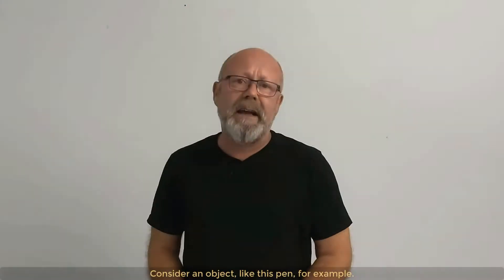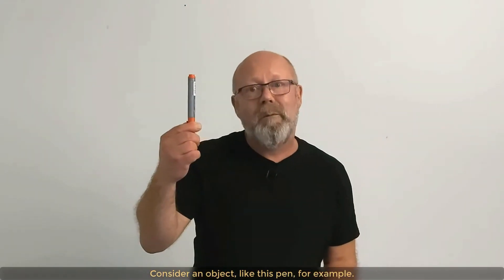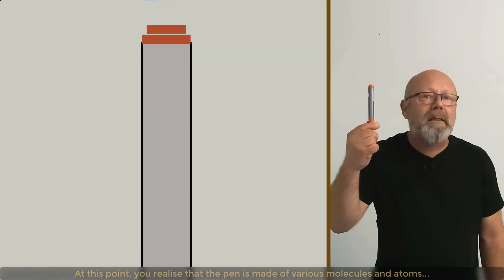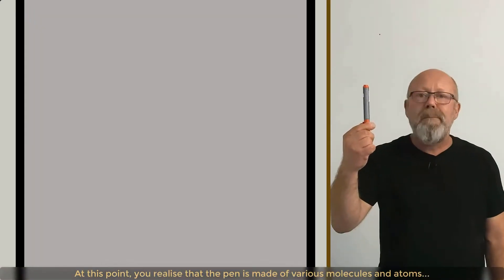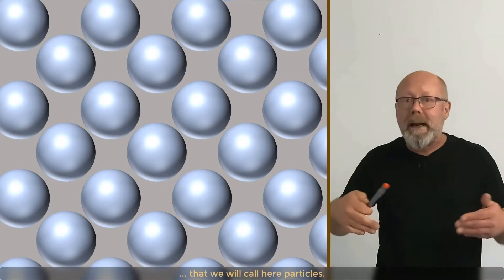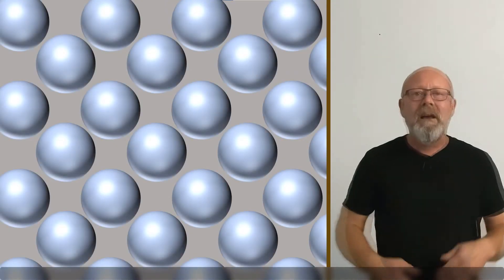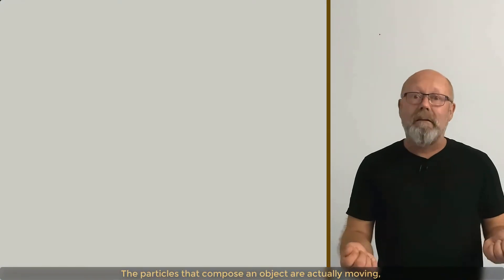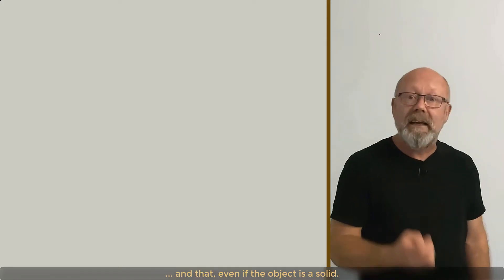Consider an object, like this pen for example, and zoom on it really deep. At this point, you realize that the pen is made of various molecules and atoms, that we will call here particles. The particles that compose an object are actually moving, and that even if the object is a solid.